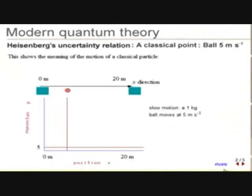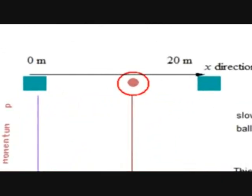A ball bounces back and forth between two blocks. Note that we can find the position and the momentum at any time on the trajectory in phase space.